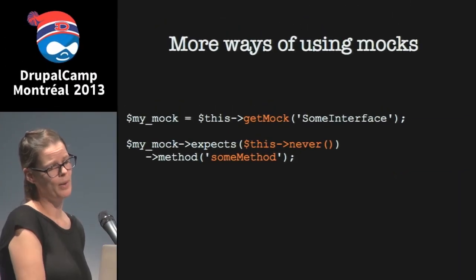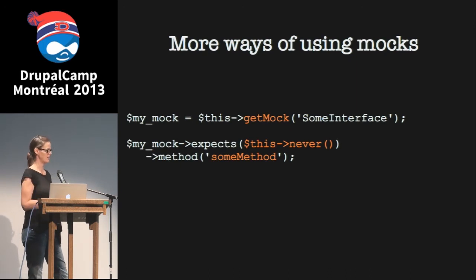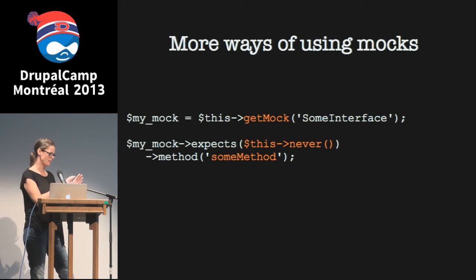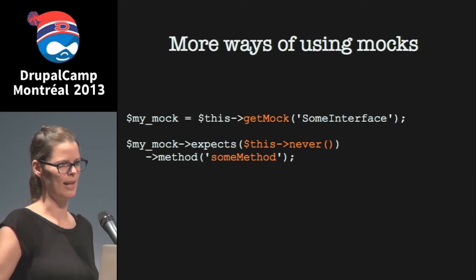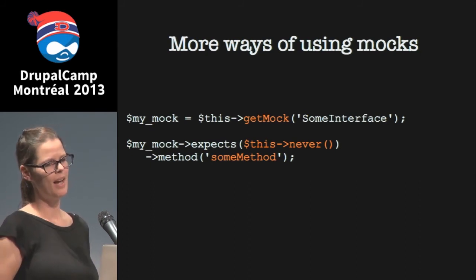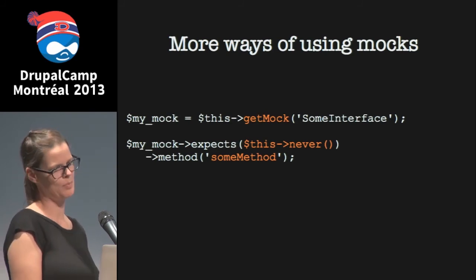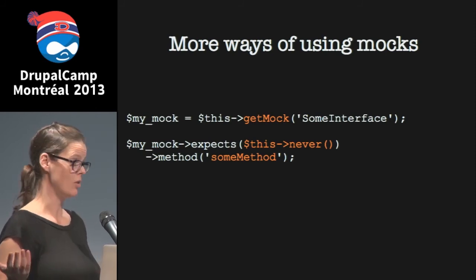Here's an even simpler expectation: setting up that someMethod will never get called on your mock during this test. You might use that in a test where you're testing a particular code path where, for certain parameters passed into your method, it's going to bypass that dependency entirely — so you're verifying it never needs to use that thing.